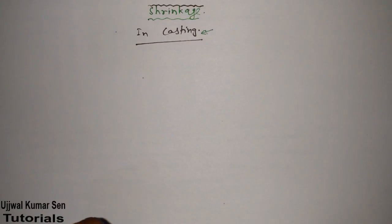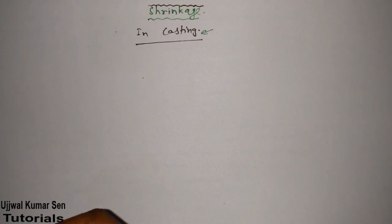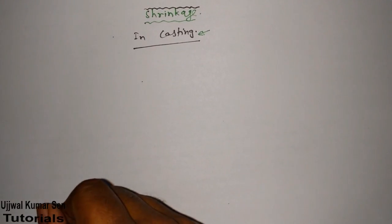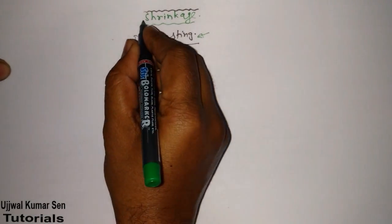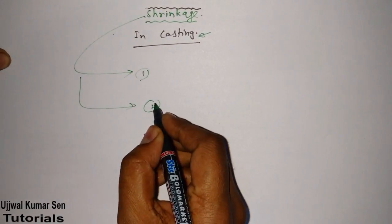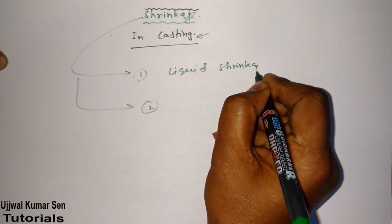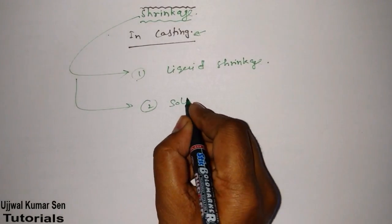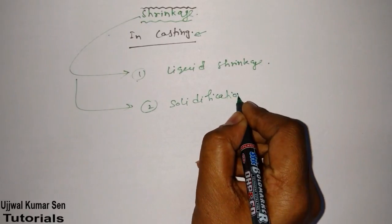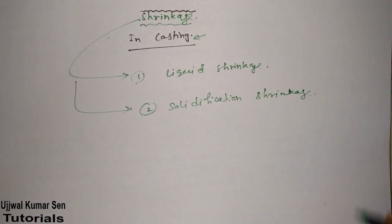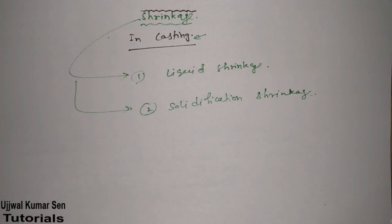Shrinkage in casting means changes will be taking place in volume. There are two types of shrinkage. The first is liquid shrinkage — when liquidification is going on and shrinkage happens, that is known as liquid shrinkage. The second is solidification shrinkage — when there is a constant freezing temperature and during phase transformation, if shrinkage takes place, it is known as solidification shrinkage.